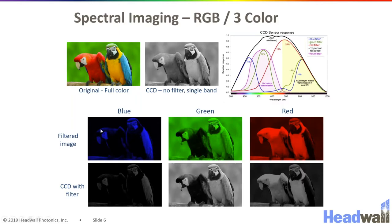So you are either collecting a blue image, a green image, or a red image. When you put the intensities of these images together and color one blue, one green, and one red, they form together to make an RGB image like we are accustomed to seeing.